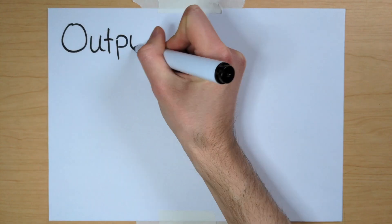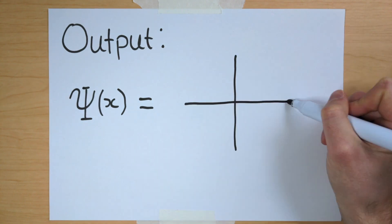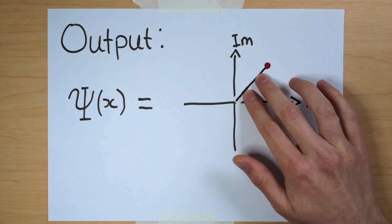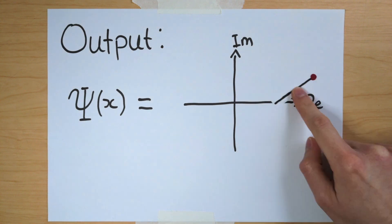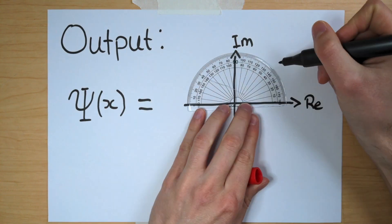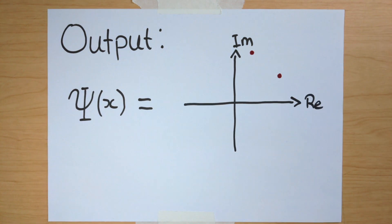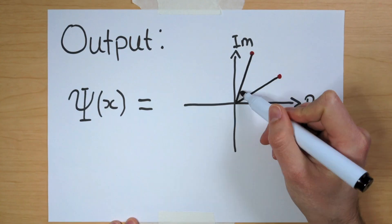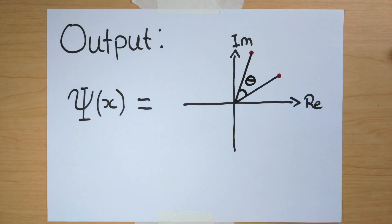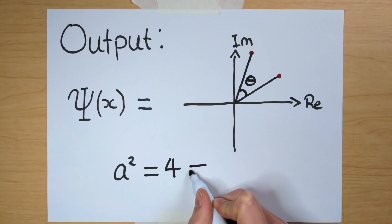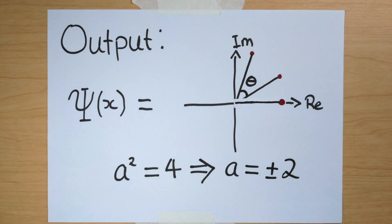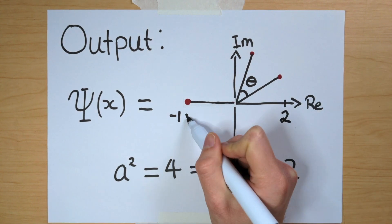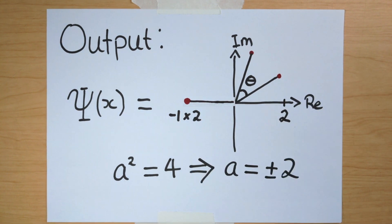Now have a think about this. What happens if I rotate the complex output of my wave function through some angle? This doesn't change the distance of the number from the origin. So rotating the output by any angle doesn't change the measurement probabilities. It's just like if I only care about a number squared, it doesn't matter if the original number is positive or negative. A real number being multiplied by minus 1 corresponds to a 180-degree rotation of the number in the complex plane.